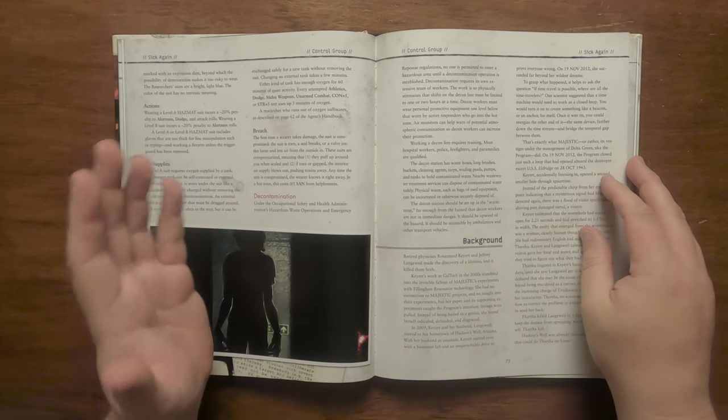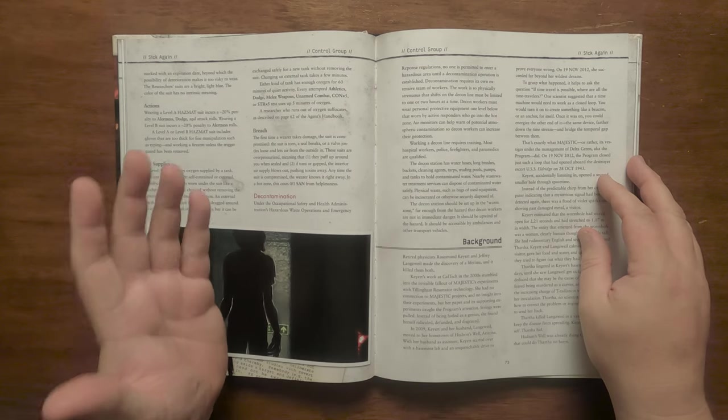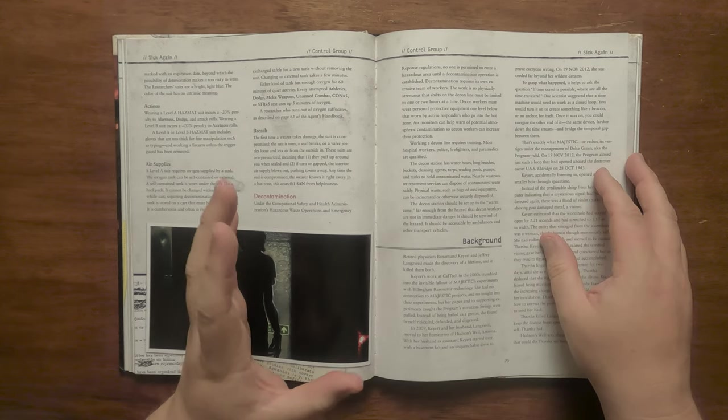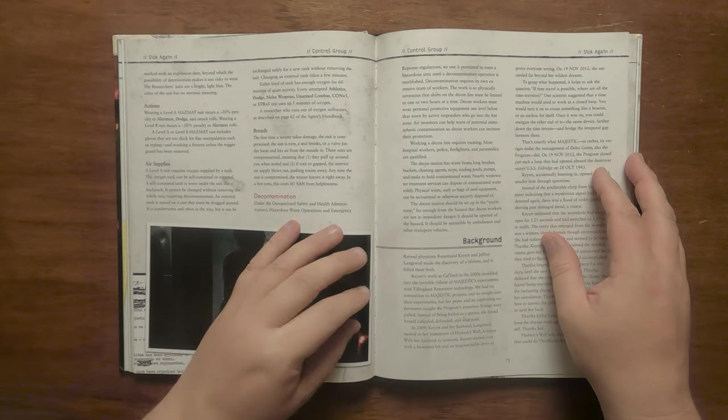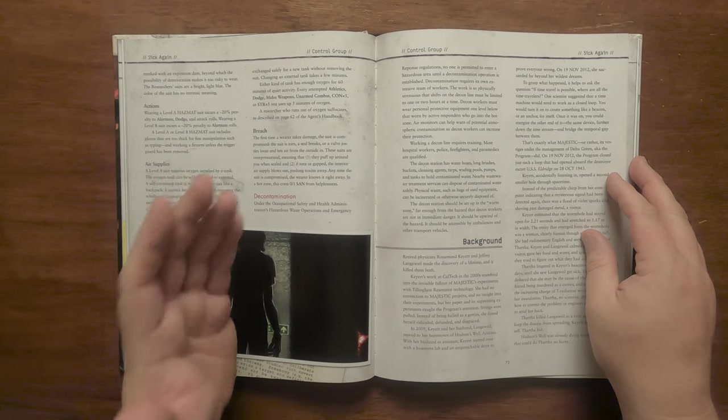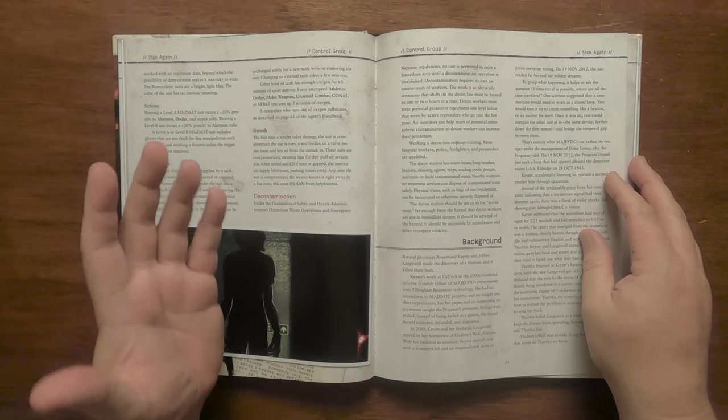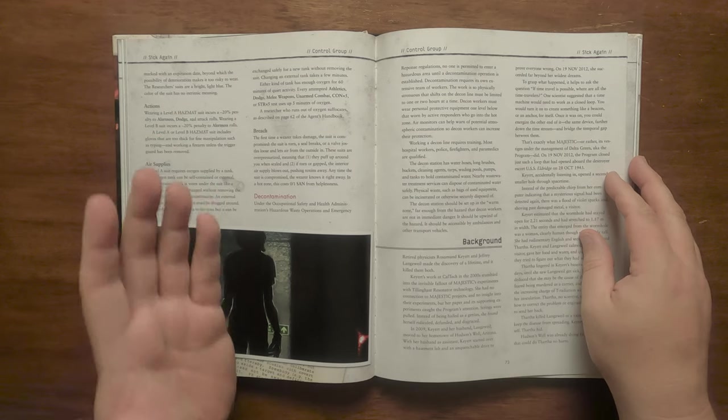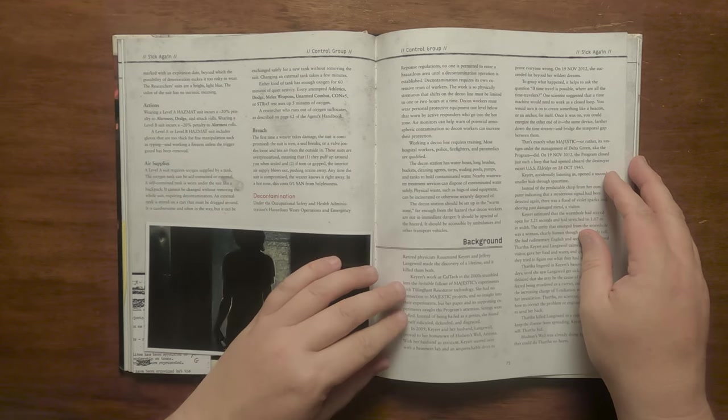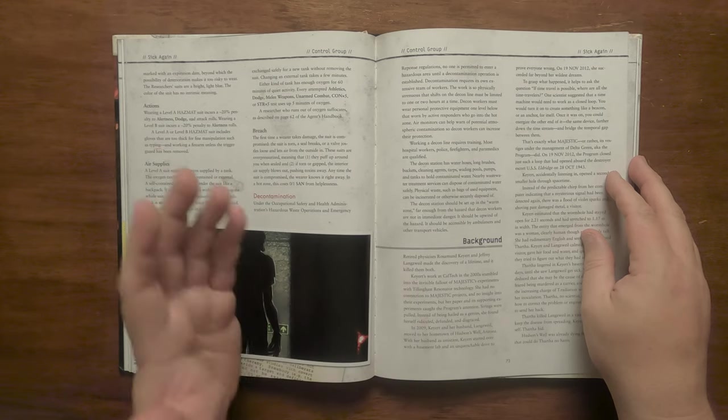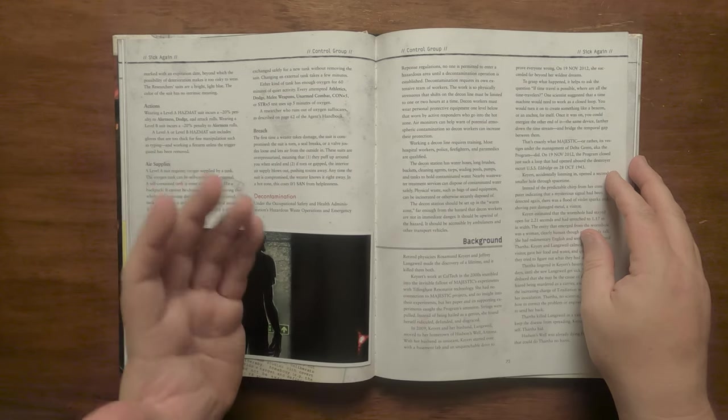The entity that came through was a woman. Clearly human but tall and only had rudimentary English. It was determined that her name was Thartha. Once calmed Kyert and Langsville gave her food and drink and talked to her. Two days after Thartha arrived Langsville got sick. Thartha worked out that she could be the cause of the illness and was scared she would be killed as she was the carrier.